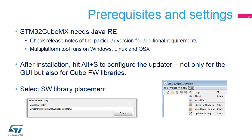Download the STM32CubeMX installer for free from the ST website and install it. Then set your preferences in the settings menu — one menu for the updater and library download (ALT+S), the other for code generation and integration with development tool chains (ALT+P). Once this setup is completed, a new project can be created.